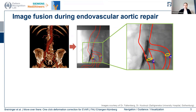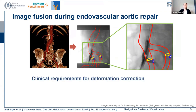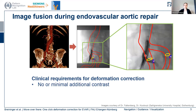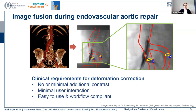To recover the accuracy of the fusion, we propose a method to model this deformation with the following clinical requirements in mind. The correction should work with no or minimal additional contrast agent, meaning we don't need a contrast injection showing the entire aorta, but only a small targeted injection with, for example, diluted contrast agent. Furthermore, we want to keep user interaction to a minimum so that the method remains easy to use and can be integrated into existing clinical workflows.